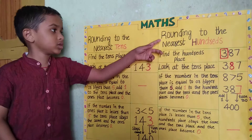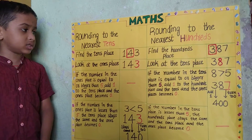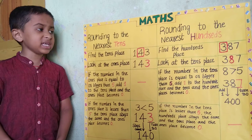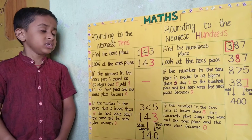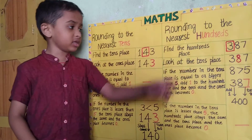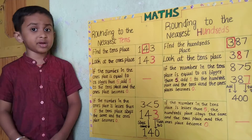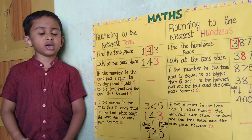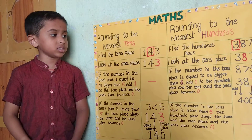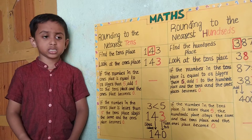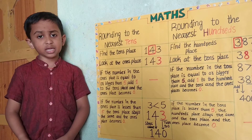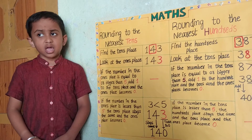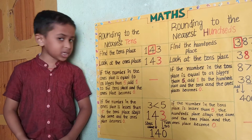Next, rounding to the nearest hundreds. For example, we have 387. Here we have 3 in the hundredth place. Look at the tenth place. Here we have 8 in the tenth place. If the number in the tenth place is equal to or bigger than 5, add 1 to the hundredth place and the tenth becomes 0.